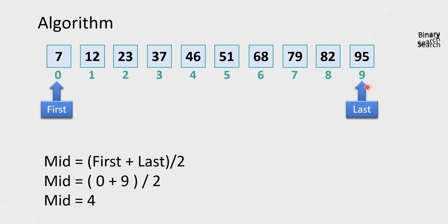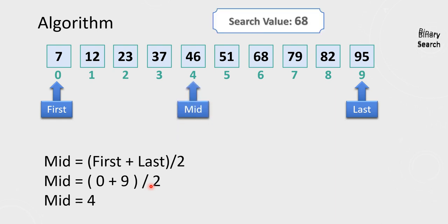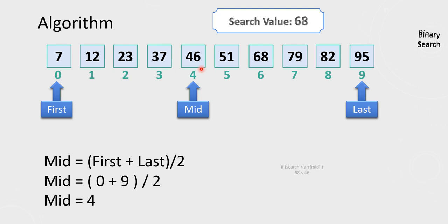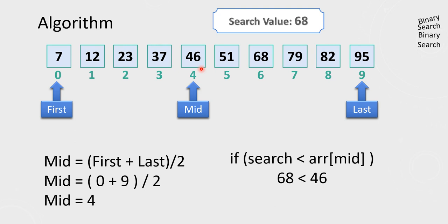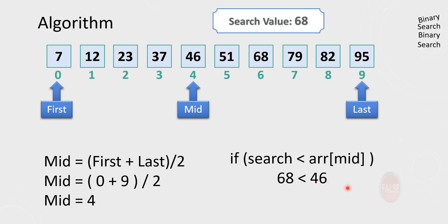Once the midpoint is fixed at 4, we are ready to verify the search value, which is 68. The first condition: check whether the search value is less than the array element at mid. The value at mid is 46. Is 68 less than 46? This is the reason binary search only works on a sorted array. In this case the condition is false, so we go to the second condition.